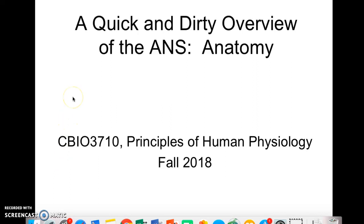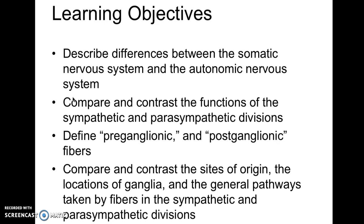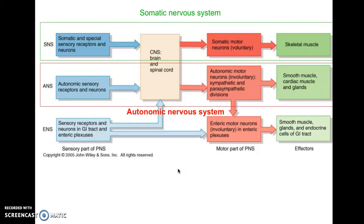Welcome to a quick and dirty overview of the ANS. In this short presentation, I'd like to talk about the anatomy of the autonomic nervous system, and specifically the anatomy of the motor fibers traveling from the central nervous system out to the effectors. The learning objectives focus on the differences between the autonomic nervous system and the somatic nervous system, and comparing and contrasting sites of origin, locations of ganglia, and pathways taken in the sympathetic and parasympathetic divisions.